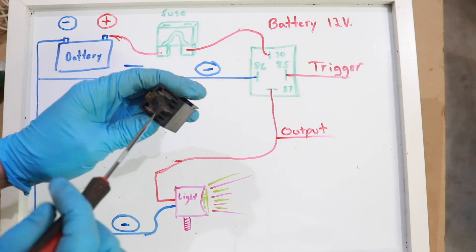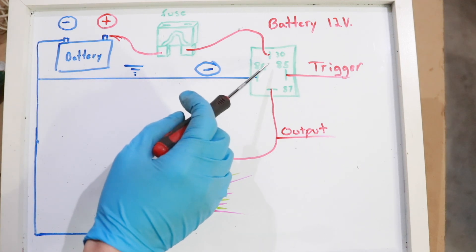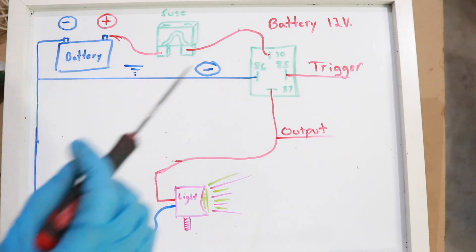If you take a look at the backside of the relay where the terminals are, next to each terminal will be a number: 30, 85, 86, and 87.